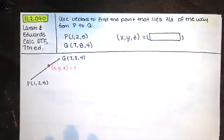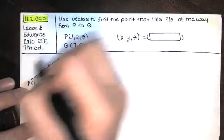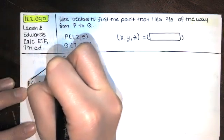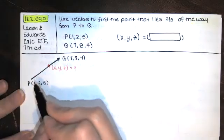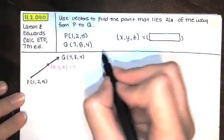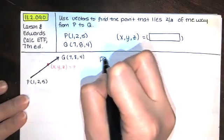Well, one way that we can find that point is first we can find the vector from P to Q. That can indicate the direction because we know that the vector from P to this point has the same direction as a vector from P to Q. So we'll start by doing that.